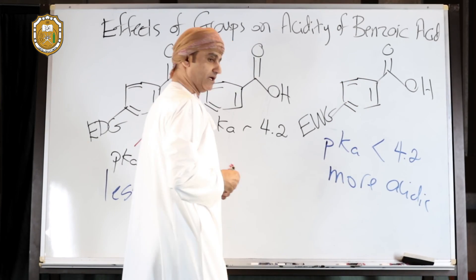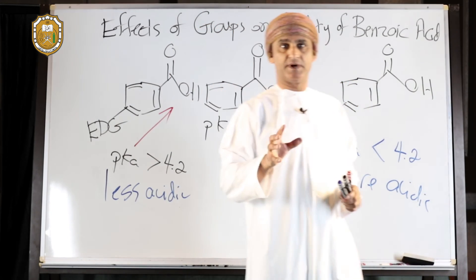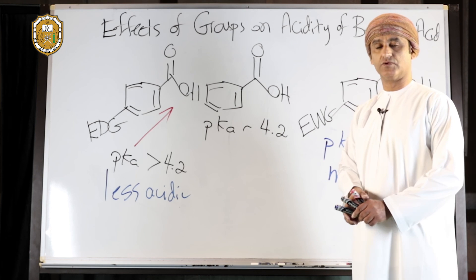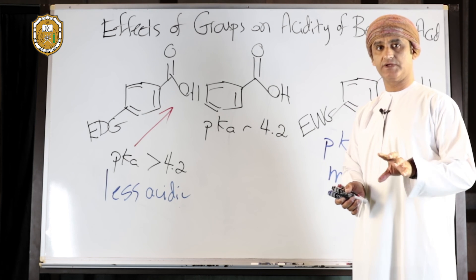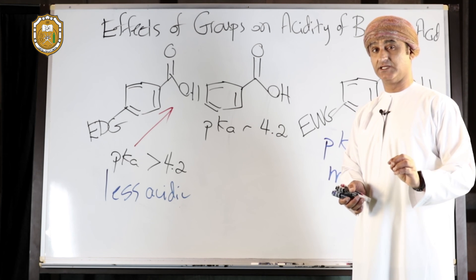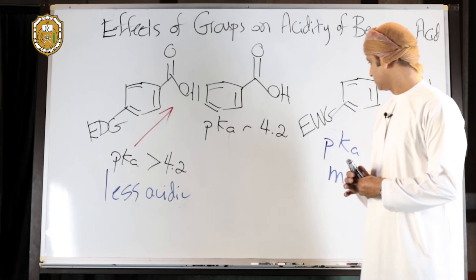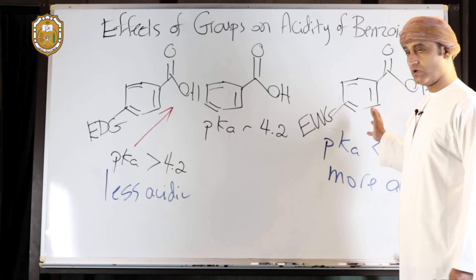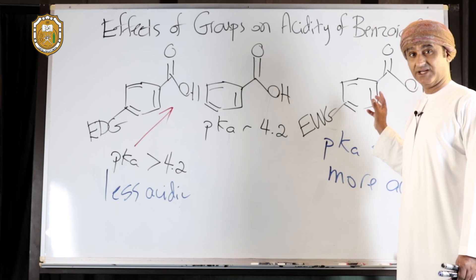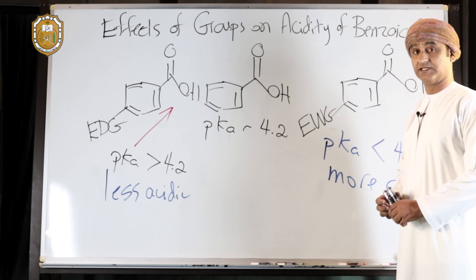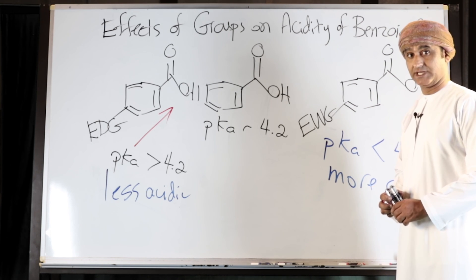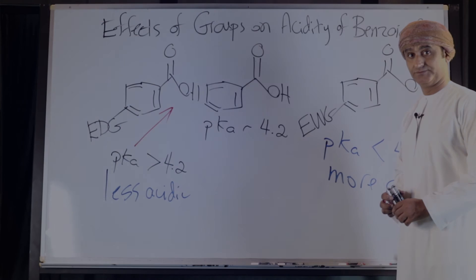In summary, electron donating groups on benzoic acid lower its acidity, while electron withdrawing groups on benzoic acid enhance its acidity compared to unsubstituted benzoic acid.